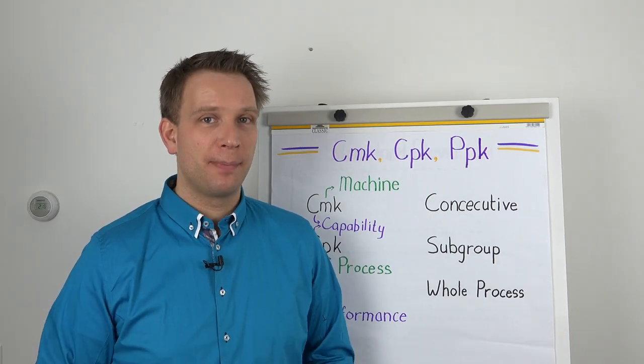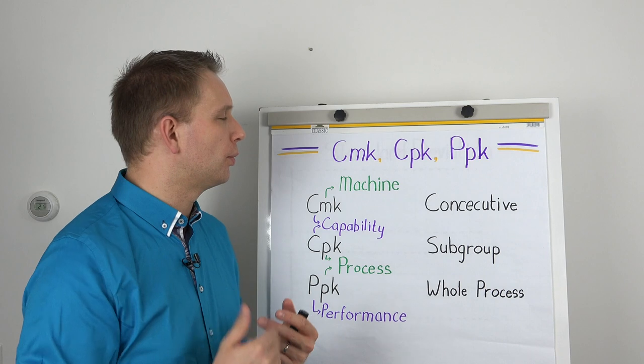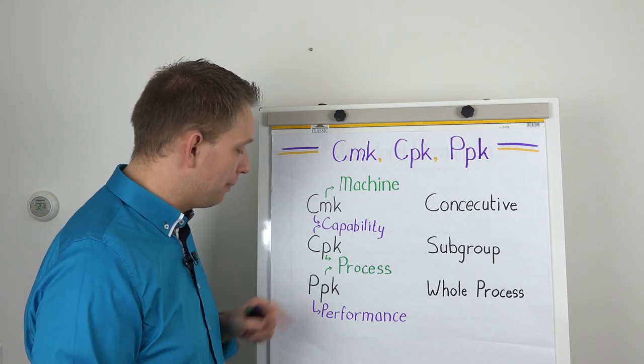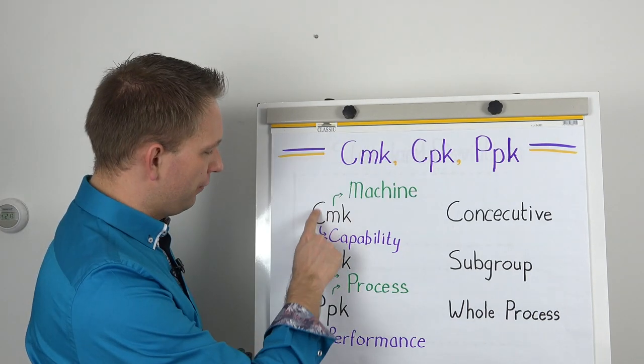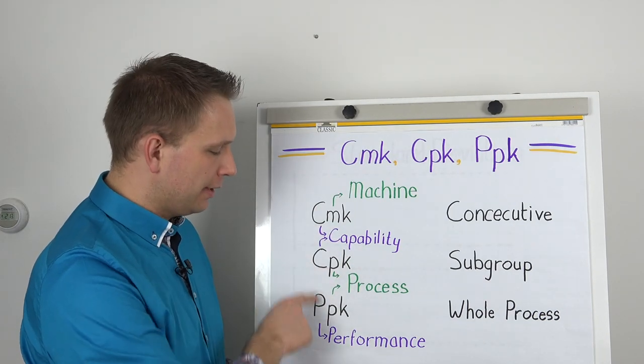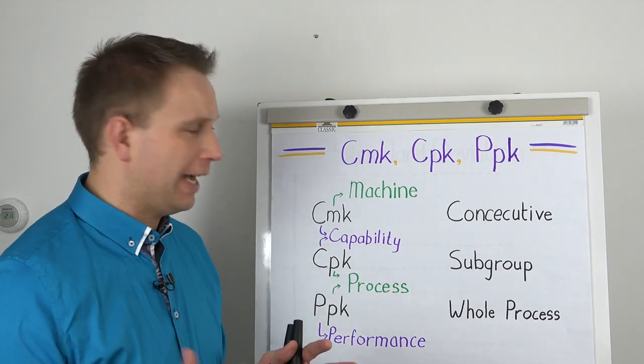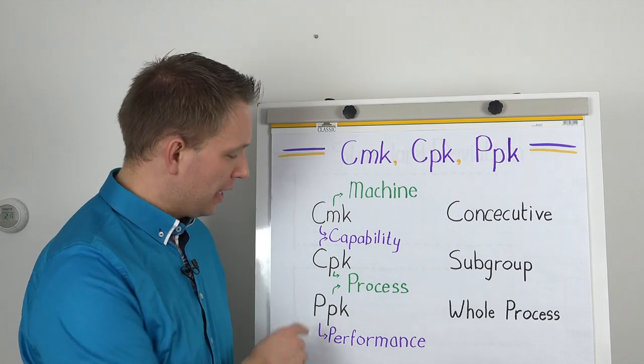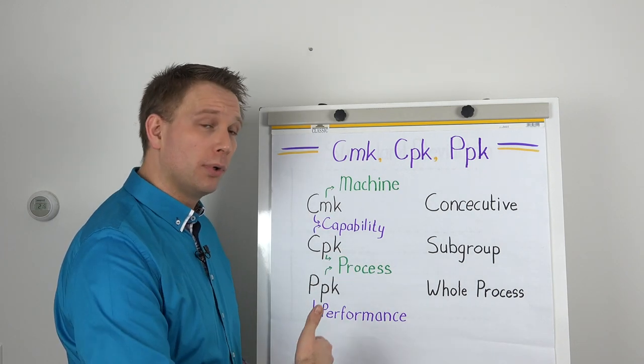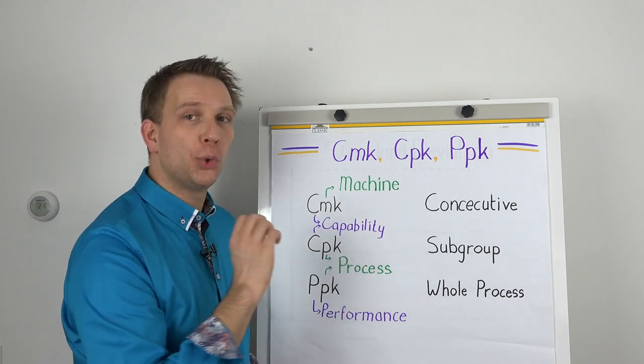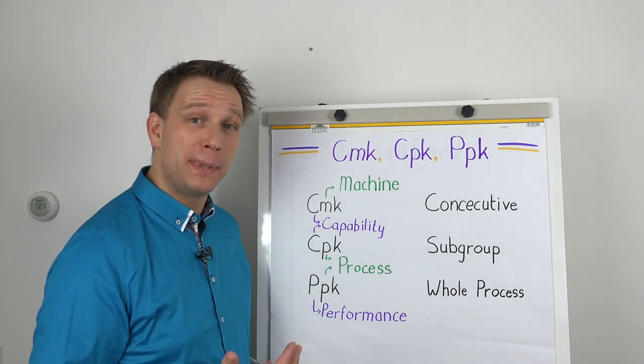So the CMK or the machine capability with a limit to one of the sides, the process capability and the PPK, the process performance, they are built up in a relatively logical way, at least the naming convention. Here what we see, the first letter is about capability or performance. So the CMK and the CPK, they measure the capability. What is our machine or process capable of? And this PPK actually measures how it performs in practice. And where do we measure what it is capable or performs? That's the second letter. So either purely the machine trying to eliminate all the external factors or with the CPK and the PPK, the process.